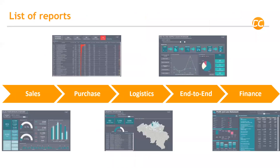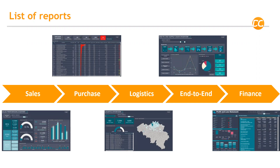Let's now deep dive into the reports. We have selected five reports: the sales report — which is, I think, one of the most important ones for all companies — the purchase report, which is very important for managing purchases on a daily basis, the logistics report to see how well distributed our trucks are, an end-to-end process-based report, and the finance report — really important for the board of directors to follow up on the P&L, balance sheet, and cash flow. Today we will only cover the profit and loss statement for the finance report.